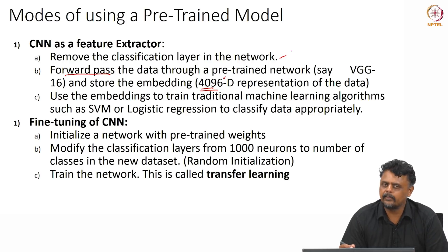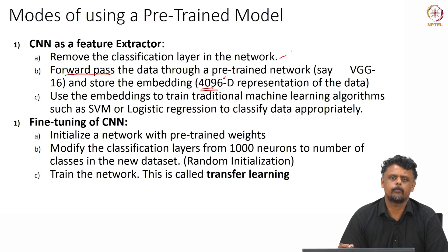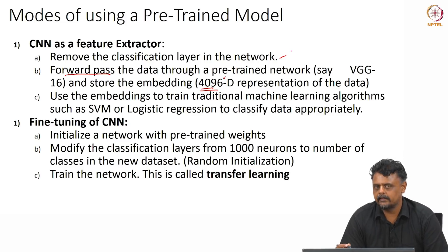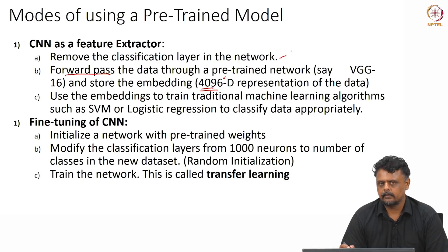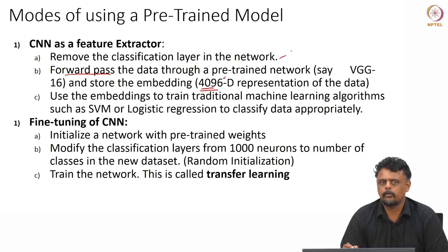If your input data is very similar — for example, type and make and model of a car, or species of birds, cats or dogs — that data is kind of similar to ImageNet data. So if you have a network trained on ImageNet data, you can use this 4096-D representation as a reduced representation of your input data and then use another machine learning paradigm to train it in order to accomplish your task.